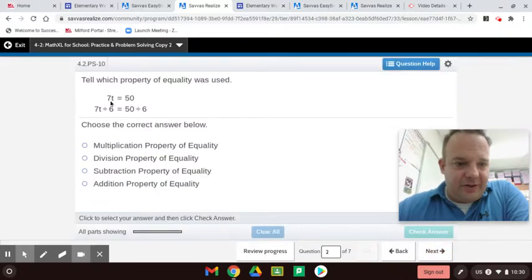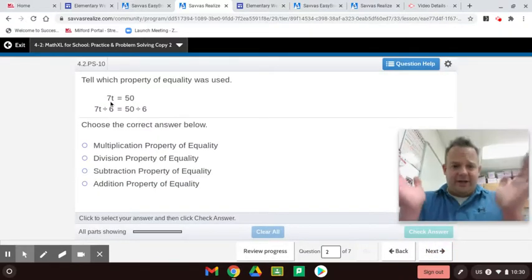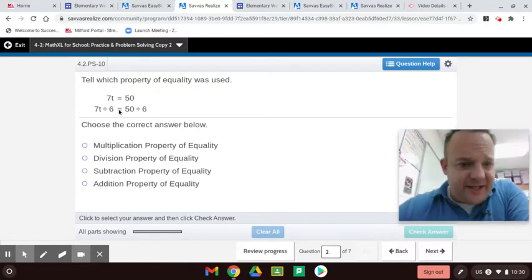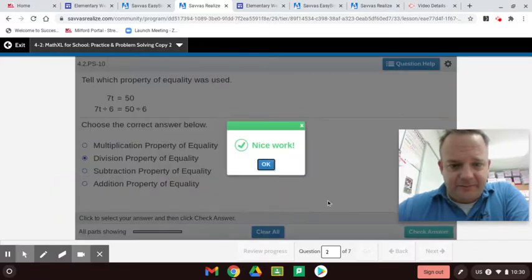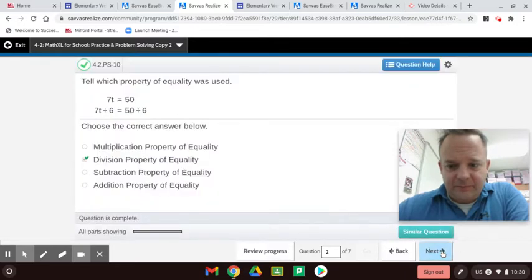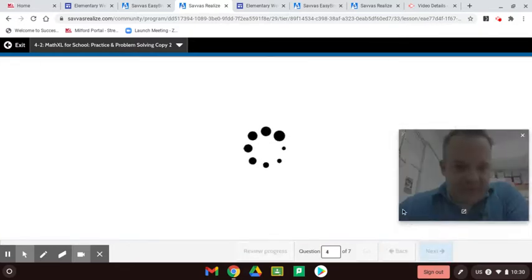Here, the original, that's equal. Think of algebra as like a balance scale, is 7t equals 50. Now, if you divide by six on one side, you have to divide by six on the other side. That's called the division property of equality. Not too bad so far, huh?